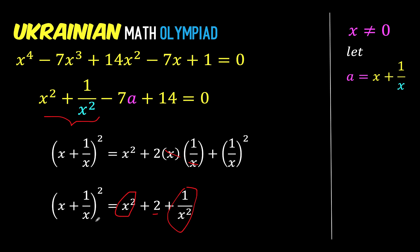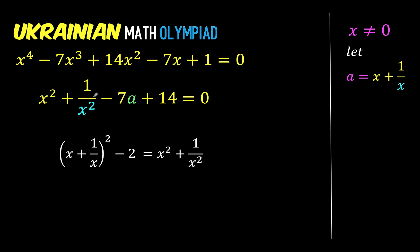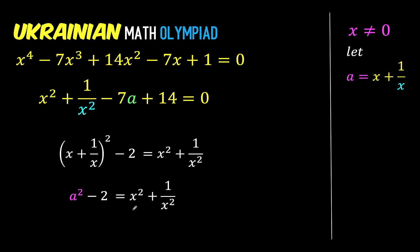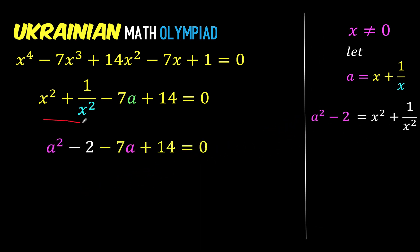So all we have to do is subtract 2 from both sides to isolate x squared plus 1 over x squared on the right side. Since we know that x plus 1 over x equals a, after substitution we now know that x squared plus 1 over x squared can be replaced by a squared minus 2. We now have a squared minus 2 in place of the first two terms, plus the rest of the expression. Then minus 2 plus 14 simplifies to plus 12.